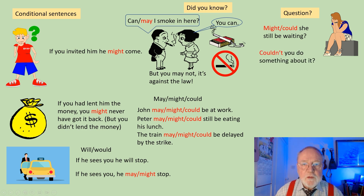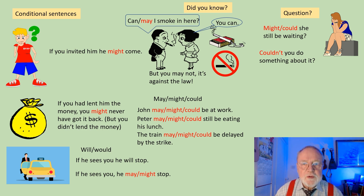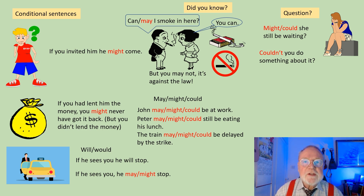Couldn't is very useful to form a question. Couldn't you do something about it? Couldn't you help me? It's a kind of suggestion in question form, and it's very common in English to ask someone to help you or to do something by introducing the sentence with 'couldn't': couldn't you do something about it?